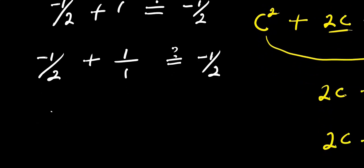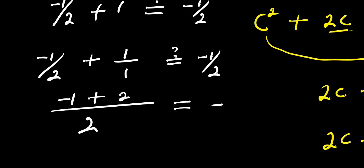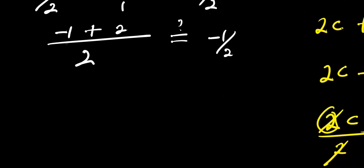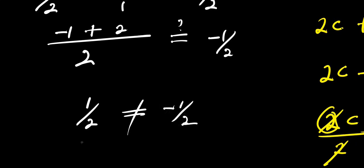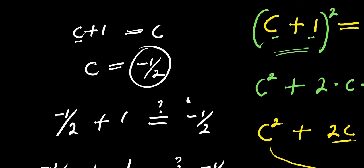Let's take the common LCM here, which is two. Two divides two: one times negative one gives negative one; two divides one: two times one gives two. So we get (−1 + 2) over 2, which equals negative one over two. That gives us positive one over two on the left-hand side and negative one over two on the right-hand side. This shows that the answer we solved is not correct.